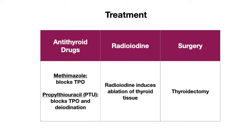So how do we treat Graves' disease once we diagnose it? There are three mainstay forms of therapy: antithyroid drugs, radioiodine therapy, and surgery. Surgery involves removing the thyroid gland completely — known as a thyroidectomy — and the patient will have to take thyroid hormone supplements for the rest of their life. Radioiodine therapy is where the patient takes radioactive iodine, which induces ablation of the thyroid tissue. Finally, the antithyroid drugs include methimazole and propylthiouracil, or PTU.